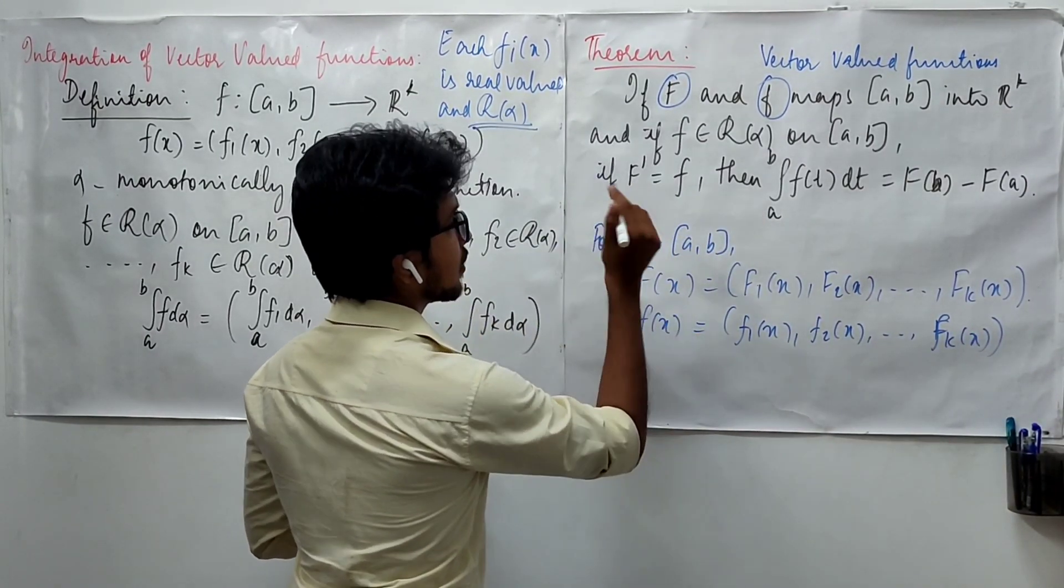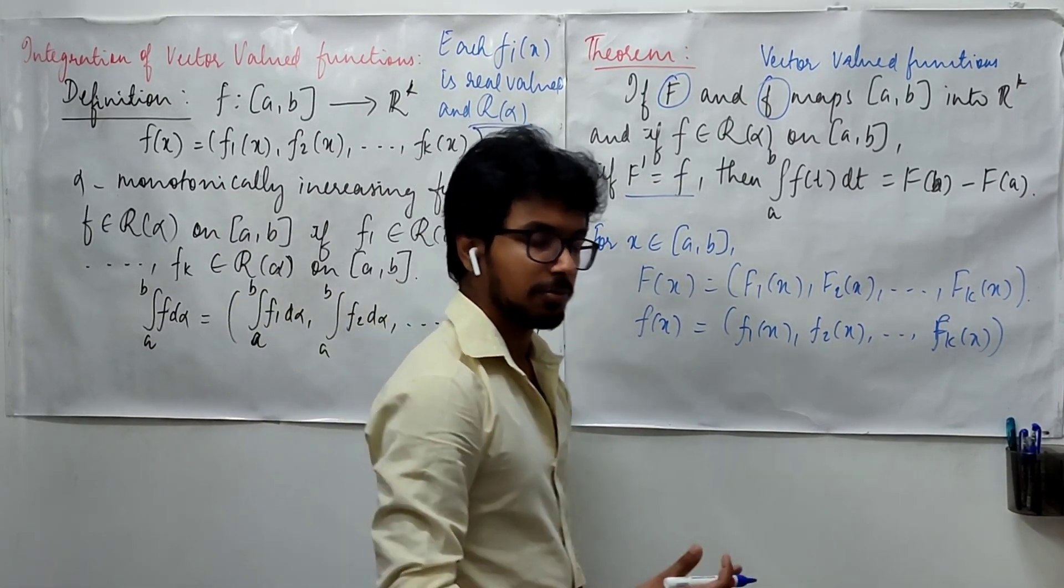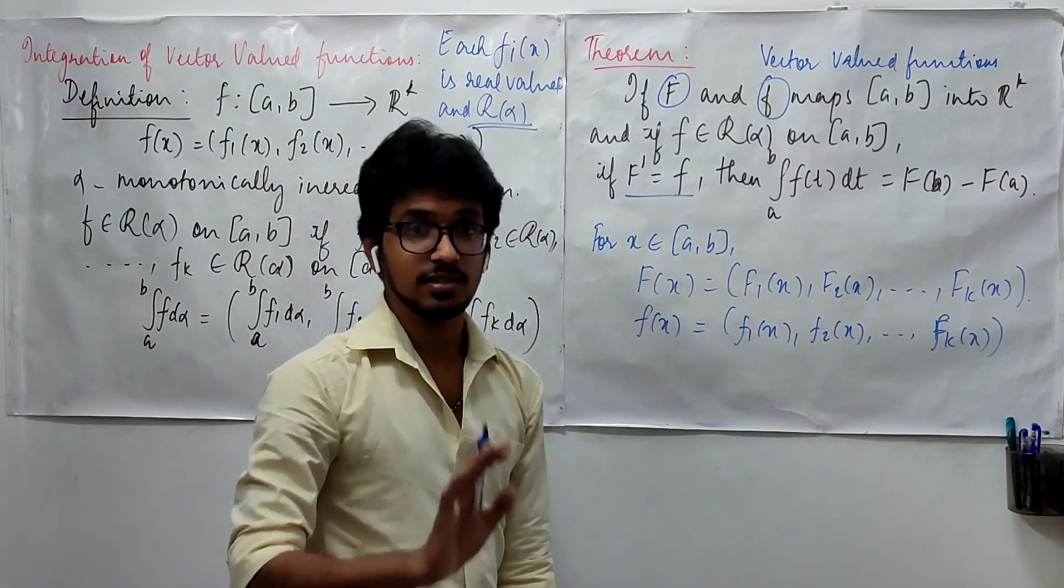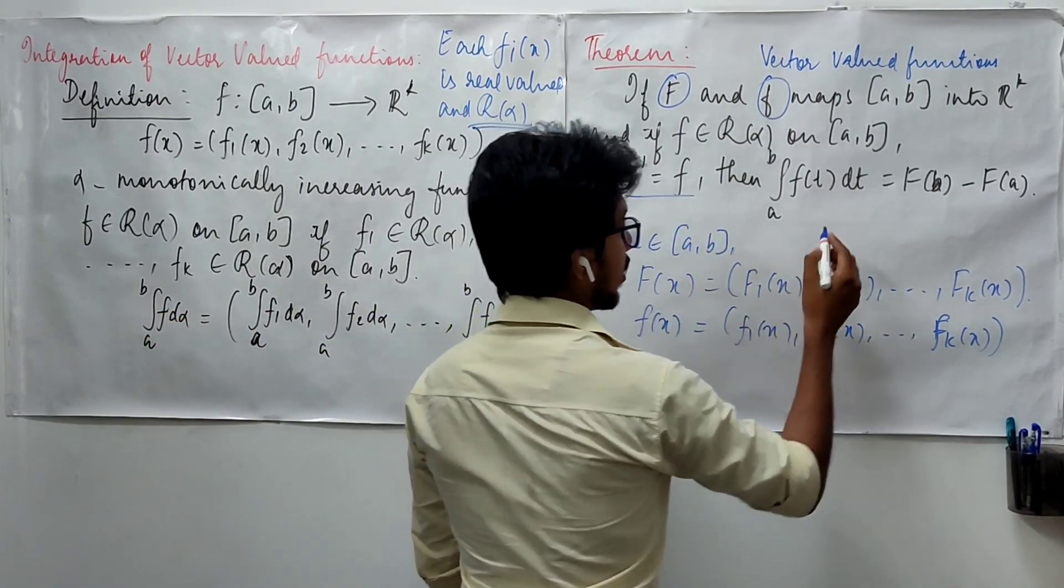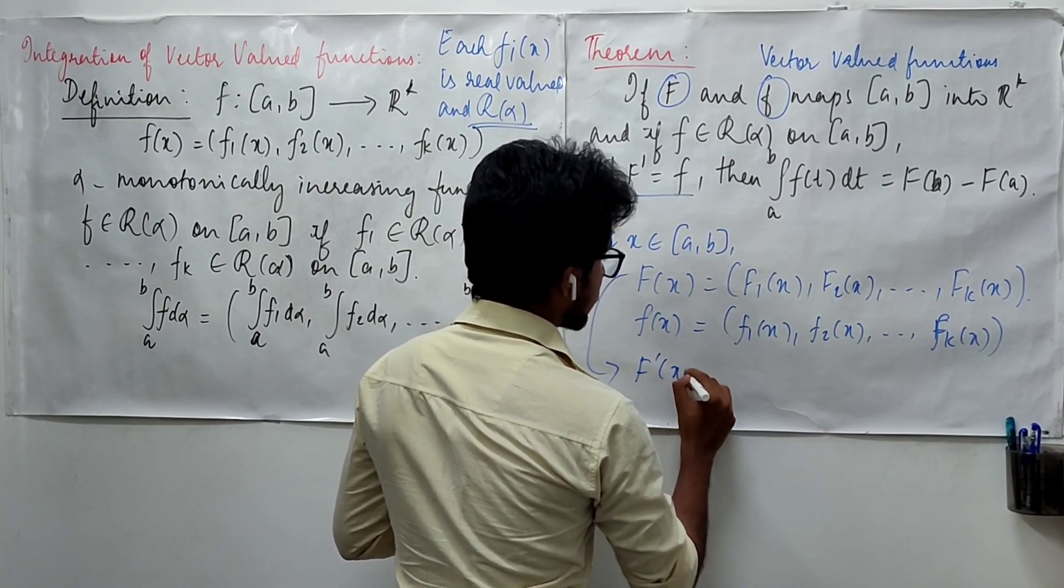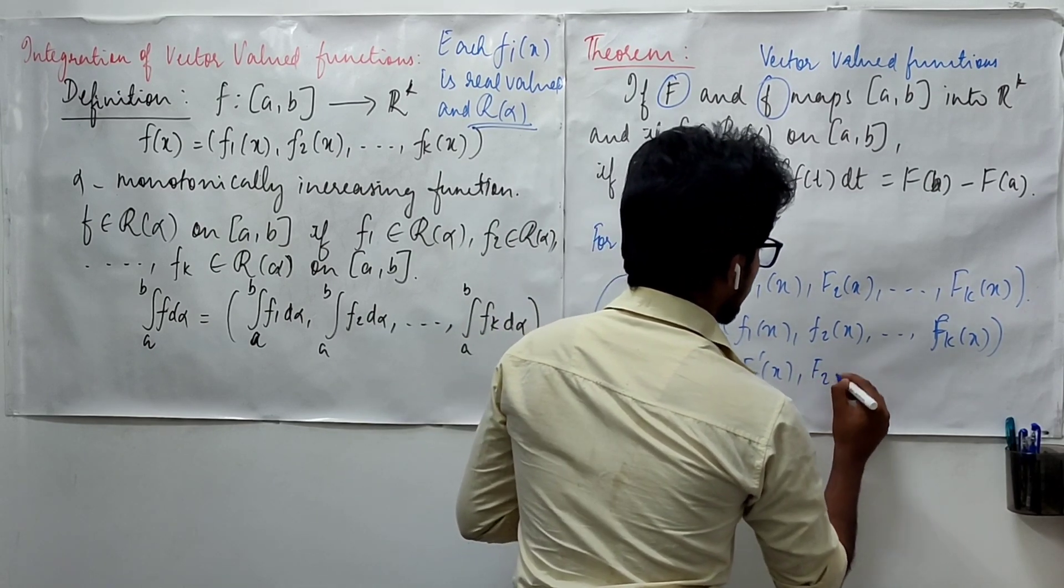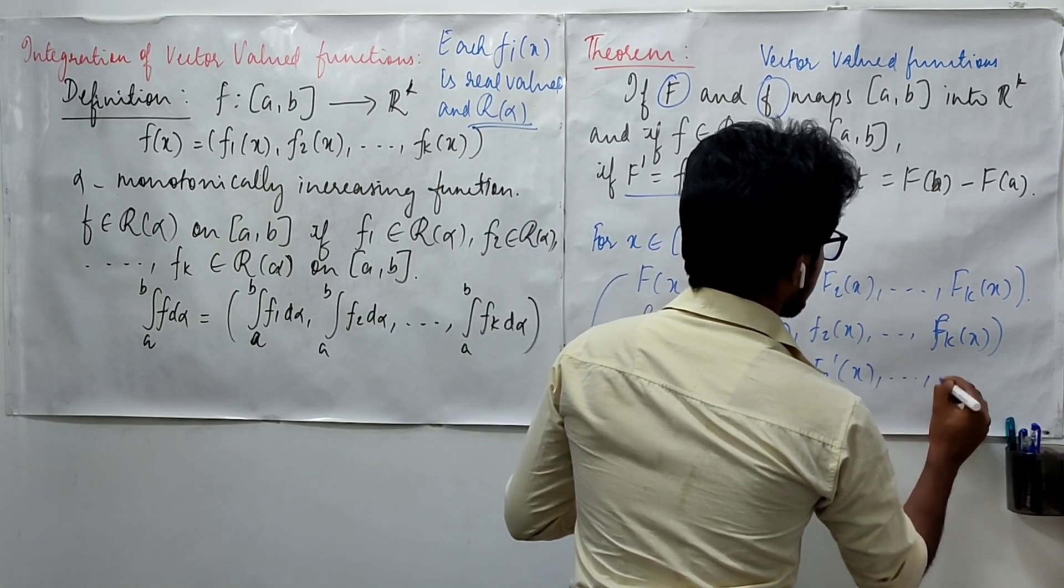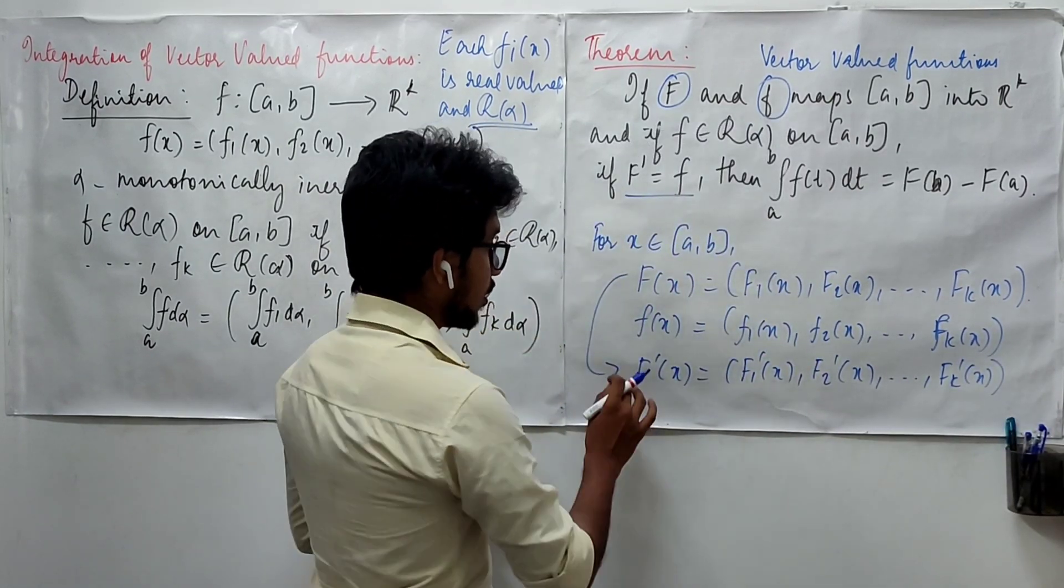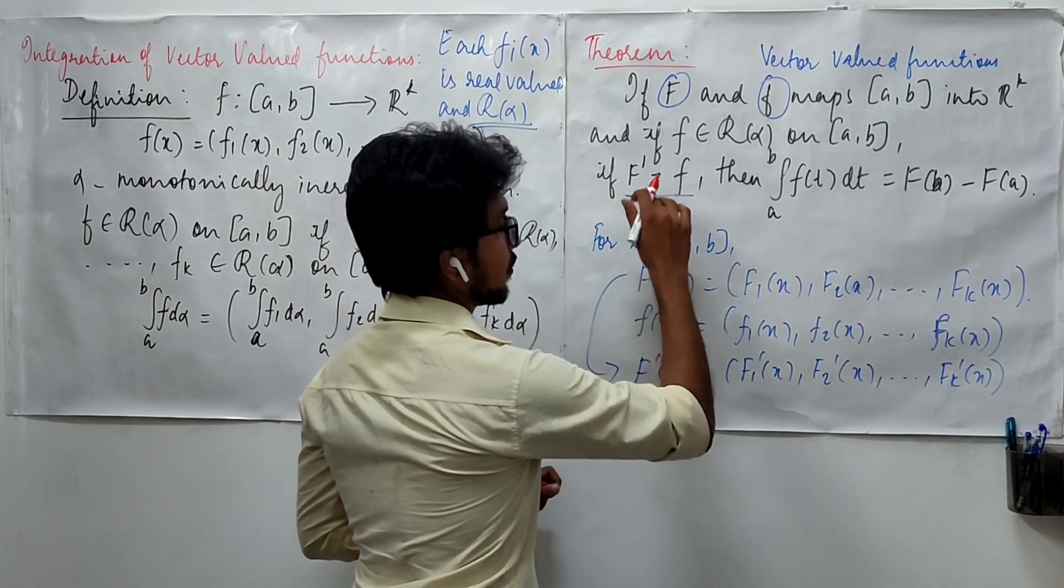So, with this idea, it is also given that F prime is small f. What do we mean by F prime? Let us go back to our course on differentiation and see. Your F prime of x is going to be simply F1 prime of x, F2 prime of x till Fk prime of x. We are given that your F prime of x is same as that of f.